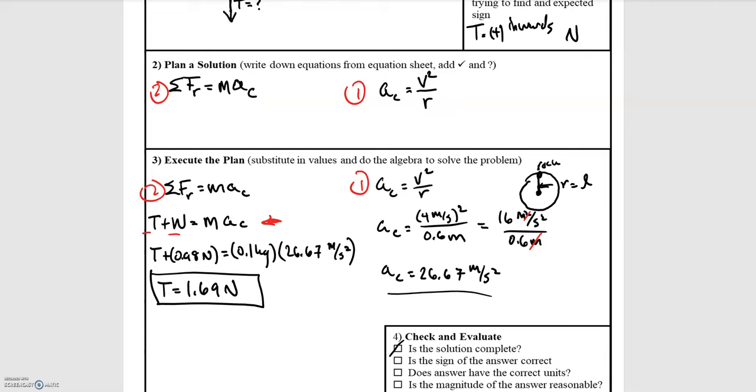The solution is complete. We found the tension. The sign is positive. We have units of newtons. Is the magnitude reasonable? This is a hard one. The force is not that large, but you can imagine that this scenario is pretty similar to if you're swinging a whistle for a sports person or a lifeguard. It's not a large mass, so this does seem like a reasonable answer.